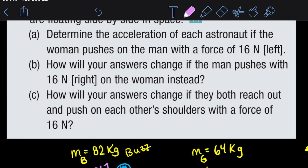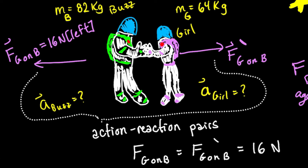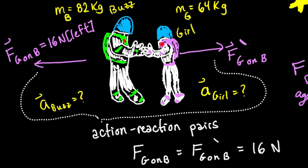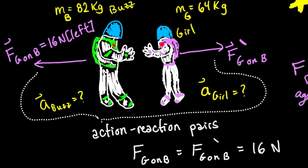Part B asks whether anything changes if the man pushes on the woman instead. In this case the man pushes on the woman with 60 newtons to the right, but by Newton's third law there's a reaction force of 60 newtons back on him to the left. The scenario is exactly the same as before, so our answers will not change.